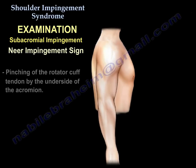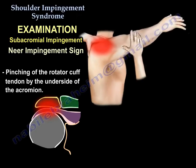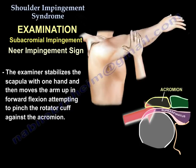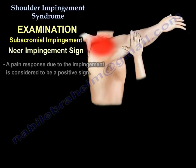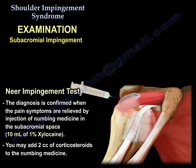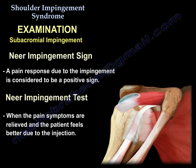The first test is the Neer impingement test. You pinch the cuff against the undersurface of the acromion by stabilizing the patient's scapula and taking the arm straight into forward flexion all the way up. When there is pain, that is a positive Neer impingement sign. The diagnosis is confirmed when pain is relieved by injection of numbing medicine — 10 ml of 1% xylocaine in the subacromial space, with 2 cc of corticosteroid optionally added. When the injection relieves pain, that is called the Neer impingement test.